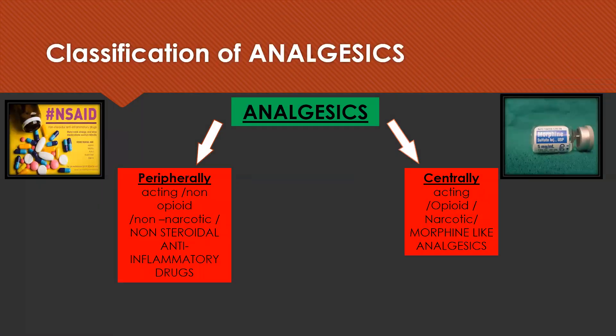The classification of analgesics. Analgesics are classified as peripherally acting, non-opioid, non-narcotic, non-steroidal anti-inflammatory drugs, and centrally acting, opioid, narcotic, morphine-like analgesics.